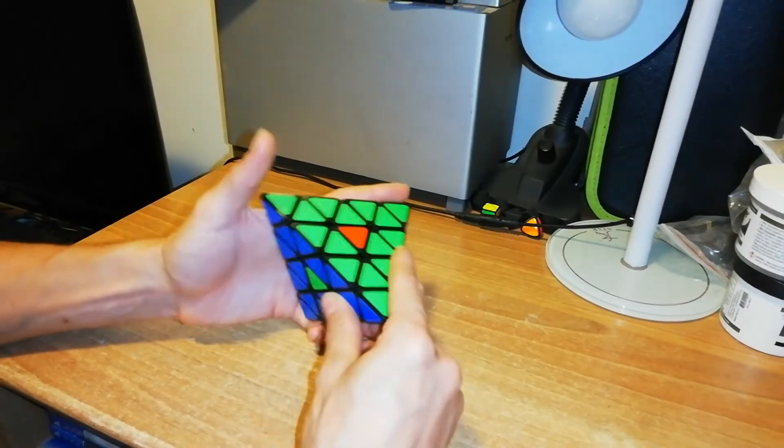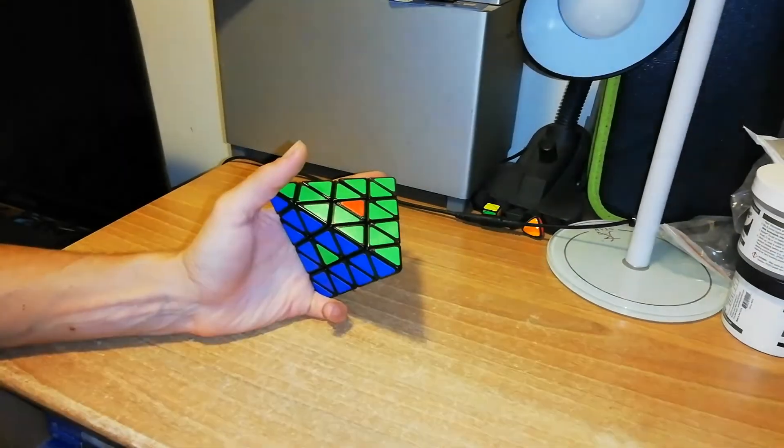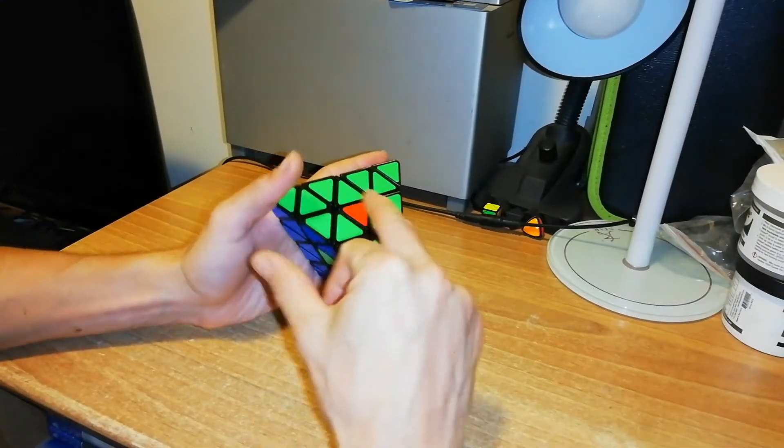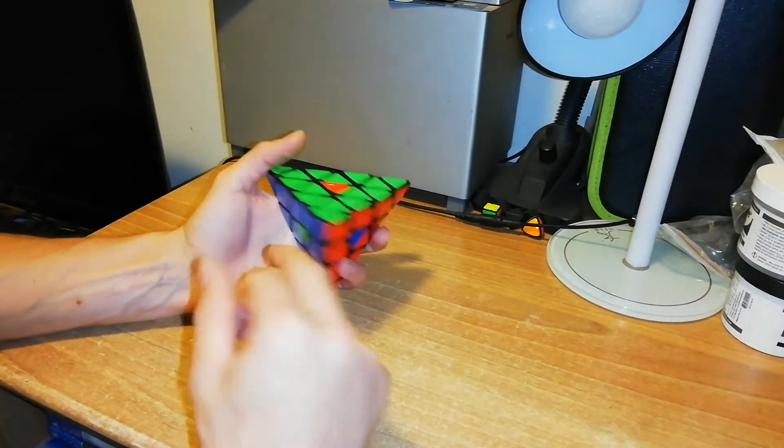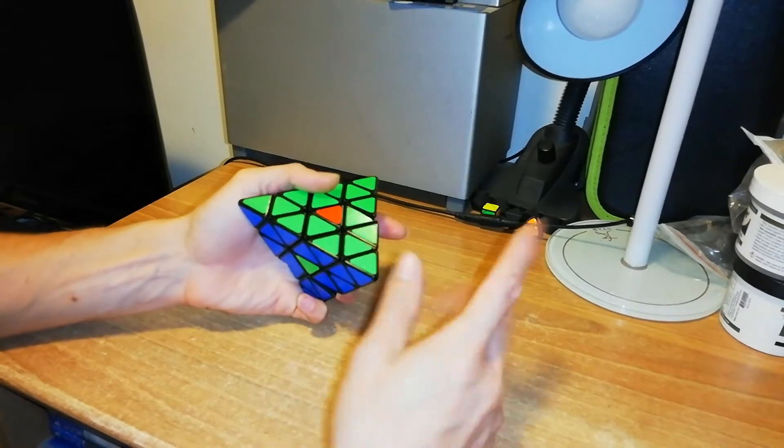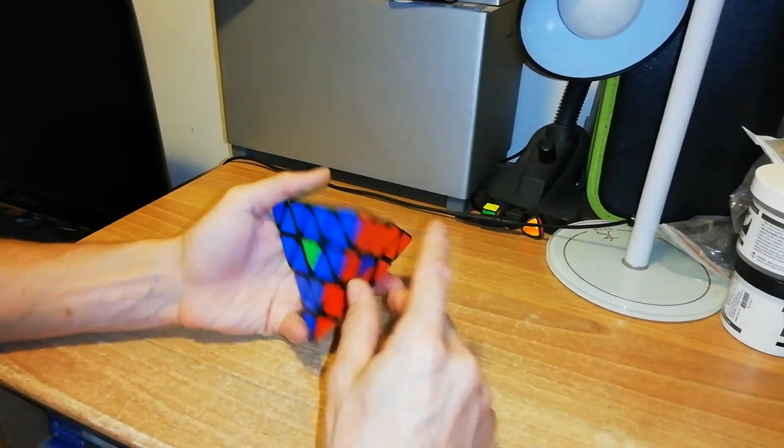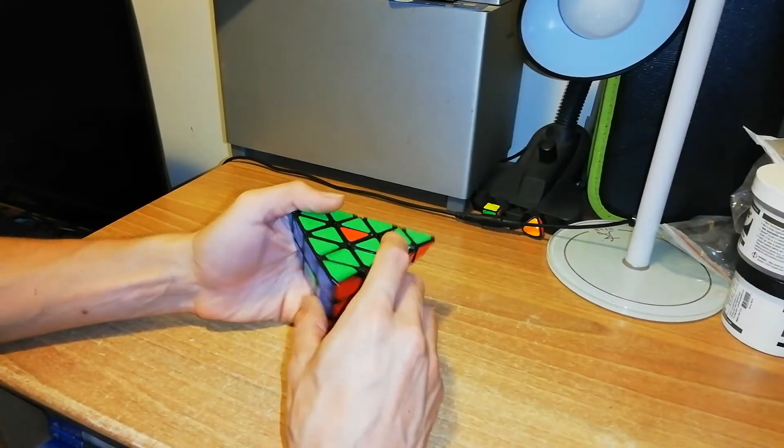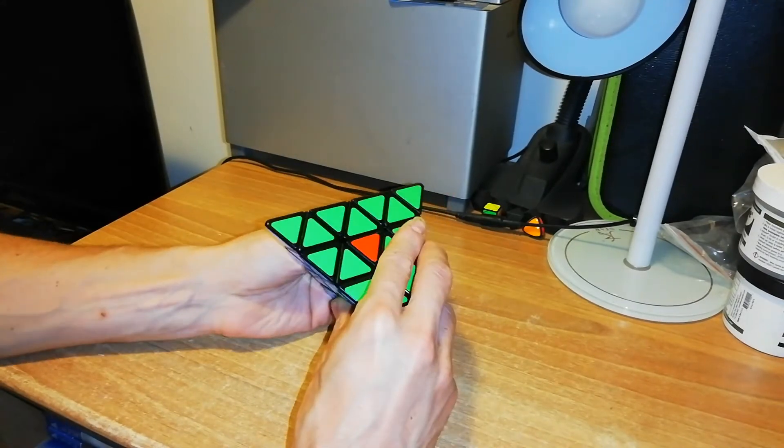you can't solve this situation using the normal strategy where you exchange this piece with this and this with this, using down down up up three times. So how to solve this case?